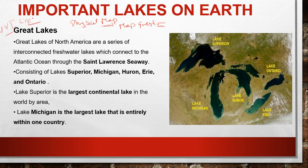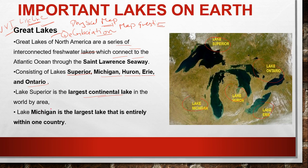The Great Lakes of North America are a series of interconnected freshwater lakes formed by deglaciation — after the glaciation period, deglaciation formed the Great Lakes. They connect to the Atlantic Ocean through the St. Lawrence Seaway and consist of Lake Superior, Lake Michigan, Lake Huron, Lake Erie, and Lake Ontario. They are the largest group of freshwater lakes in the world by area. Lake Michigan is the largest lake entirely within one country.